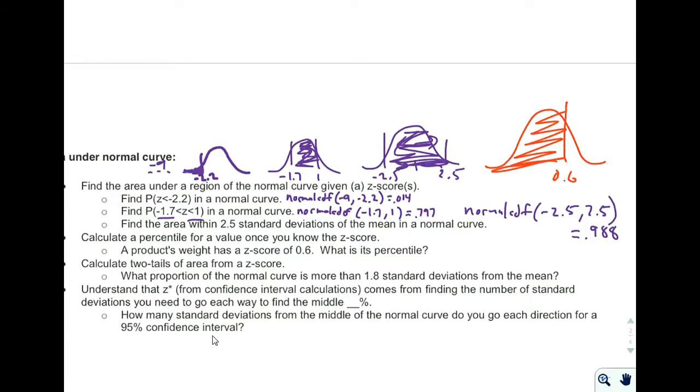So in this case, to the left of this, we're going to do normalCDF again. And we're going to go from negative infinity, some negative large number, to 0.6. And when we do that, we get 0.726, or 72.6%.